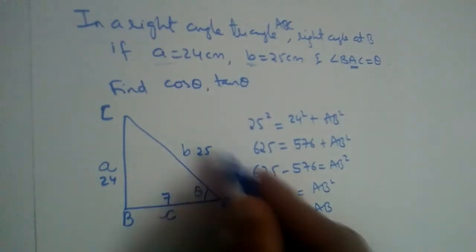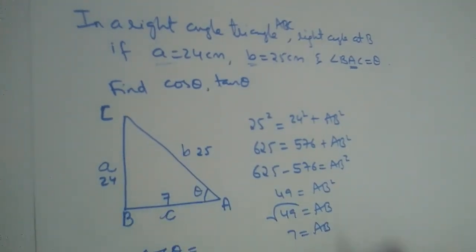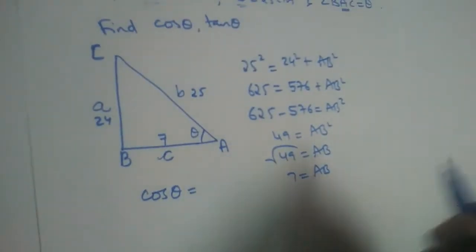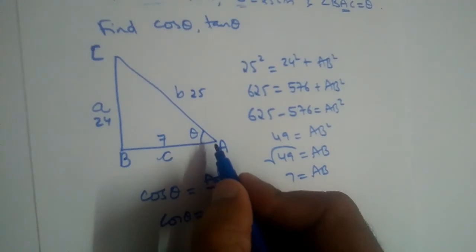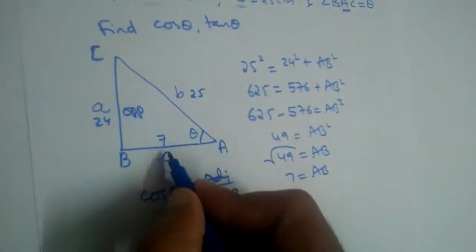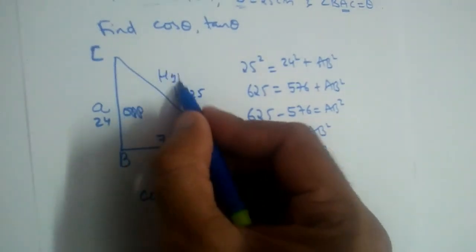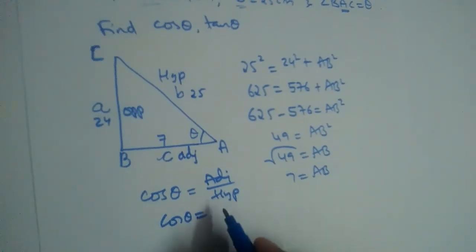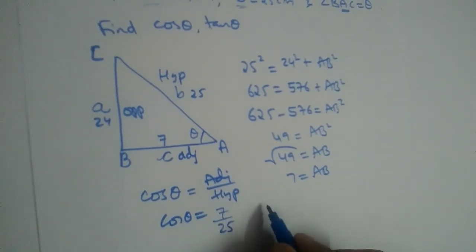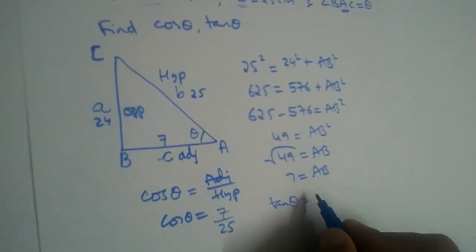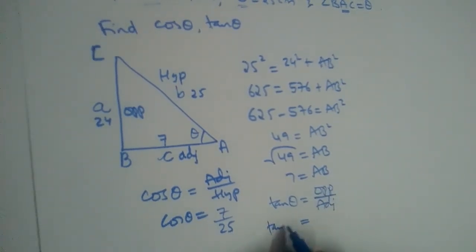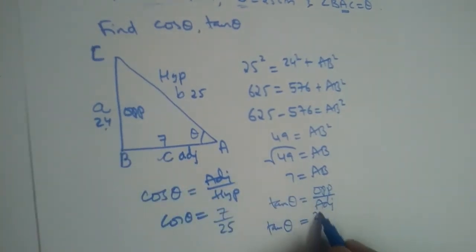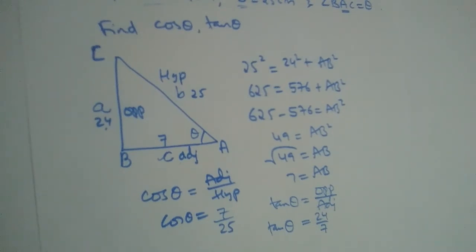When three sides are known we can find all six trigonometric ratios. Cos formula is adjacent by hypotenuse. Since theta is at A, the adjacent side is AB = 7 and the hypotenuse is AC = 25, so cos theta = 7 by 25. For tan, opposite by adjacent gives tan theta = 24 by 7.